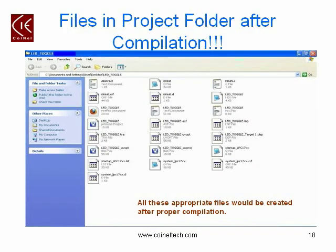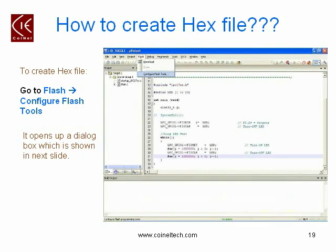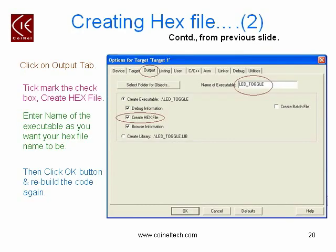These are the appropriate files which should be created after proper compilation. Now we will see how to create a hex file. To create hex files, you need to make certain configurations in Kiel Microvision 4 IDE. Go over to the Flash menu and select Configure Flash Tools. In the dialog box that appears, click on the Output tab and put a tick mark on the checkbox Create Hex File. Enter the name of the executable file as per your choice, then click OK and rebuild the code again.